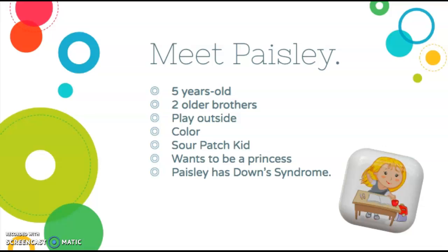For example, meet Paisley. Paisley is five years old. She has two older brothers. She loves to play outside and color. Her family describes her as a sour patch kid — she can be a little sour at first, but then she is super sweet. When Paisley grows up, she wants to be a princess. Paisley has Down syndrome.